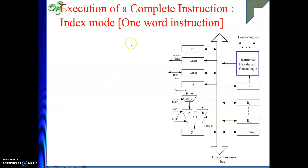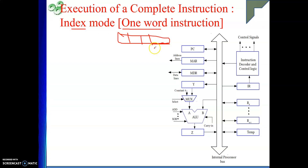My assumption is that one instruction consists of one word. That means inside one word, whatever the word length, your opcode, addressing mode, register, and the address field are all contained. Whatever is that address field — our offset in index mode — will be there inside one word itself.